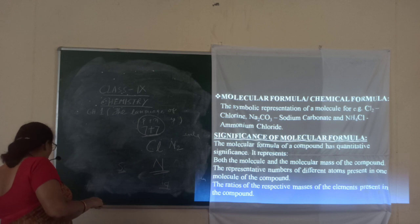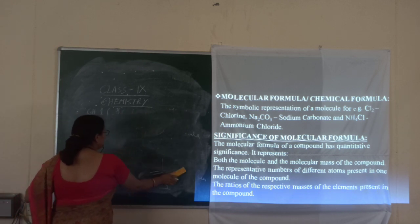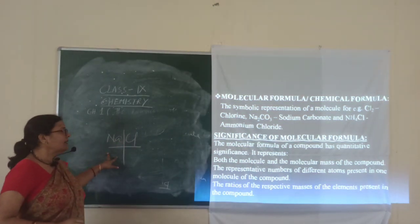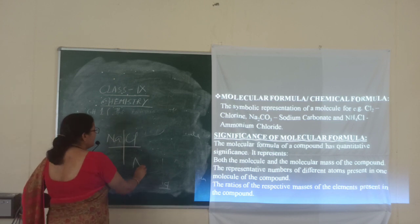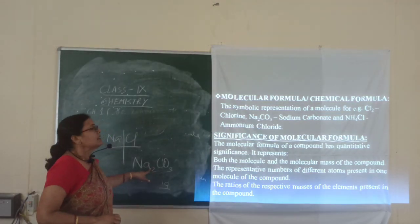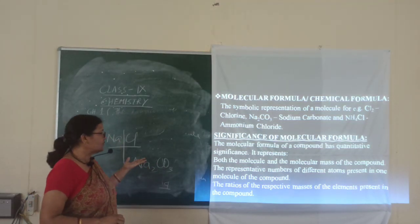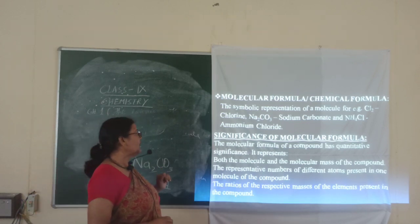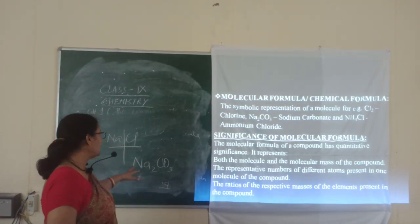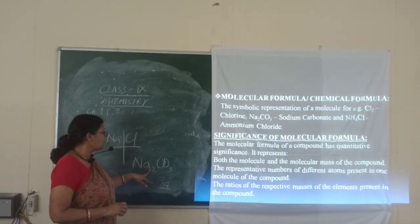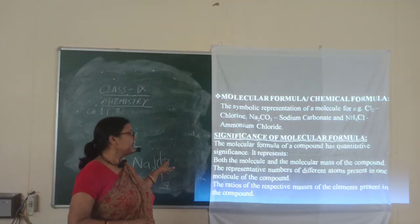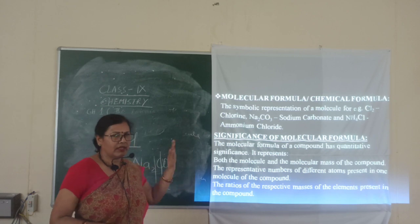Next is molecular formula. Molecular formula means when you are writing NaCl or H2O or Na2CO3. NaCl consists of two elements, that is sodium and chlorine. Na2CO3 — N is capital, a is small, and the subscript is 2. The significance of the molecular formula is that it represents the molecules and molecular mass. For Na2CO3: two sodium atoms are present, one carbon atom, and three oxygen atoms.